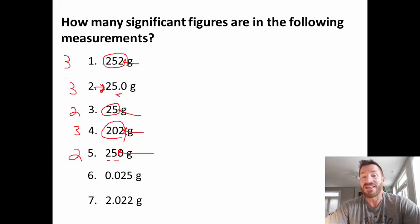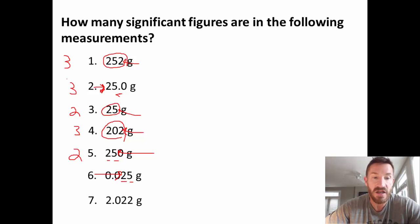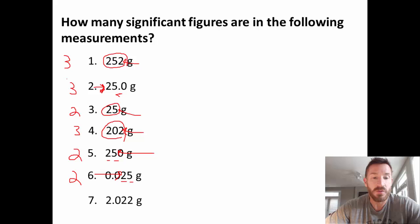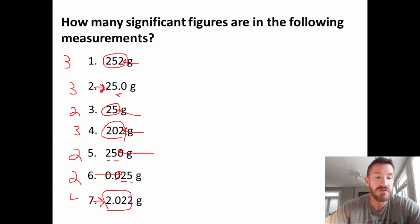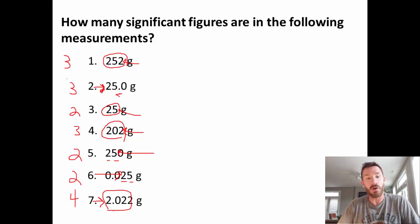For number six, 0.025: decimal present, so start from the Pacific side and draw through all zeros until we reach the non-zero 2. That leaves the 2 and the 5 as significant — two significant figures. For number seven, 2.022: decimal present — no zeros to draw through from the Pacific side, so all four digits are significant, giving four significant figures. These are the rules for identifying the number of significant digits. If you have any questions, let me know. Thanks.